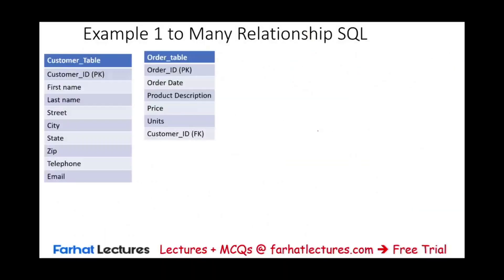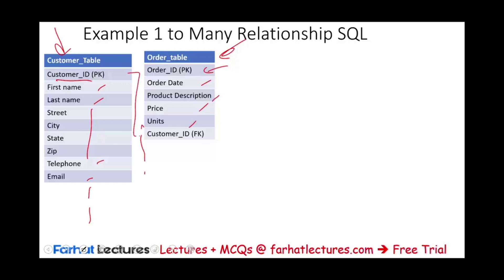Let's look at this example. We have two tables: the customer table and the order table. In the customer table, the primary key is the customer ID, and we have customer information such as first name, last name, address, telephone, and email. In the order table, the order ID is the primary key, and we have order date, product description, price, units, and total tax. We also have customer ID as a foreign key in the order table.